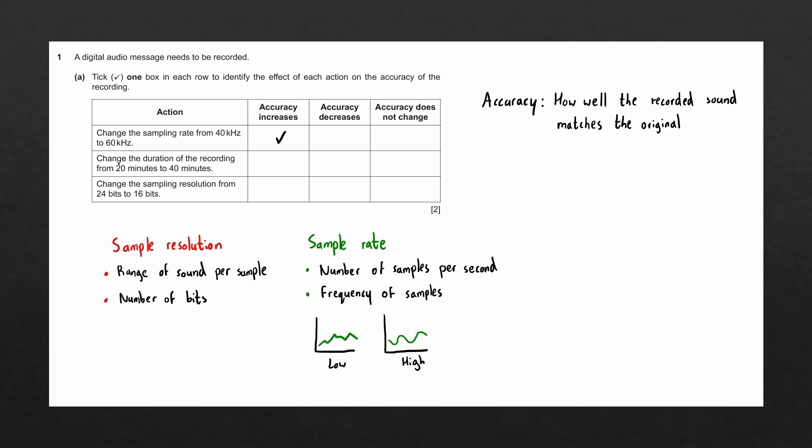The next action says to change the duration of the recording from 20 minutes to 40 minutes. The duration of the recording is not one of the factors that affects the accuracy of an audio recording. It will affect the file size, but in this case we're just worried about the accuracy. So we'll tick accuracy does not change.